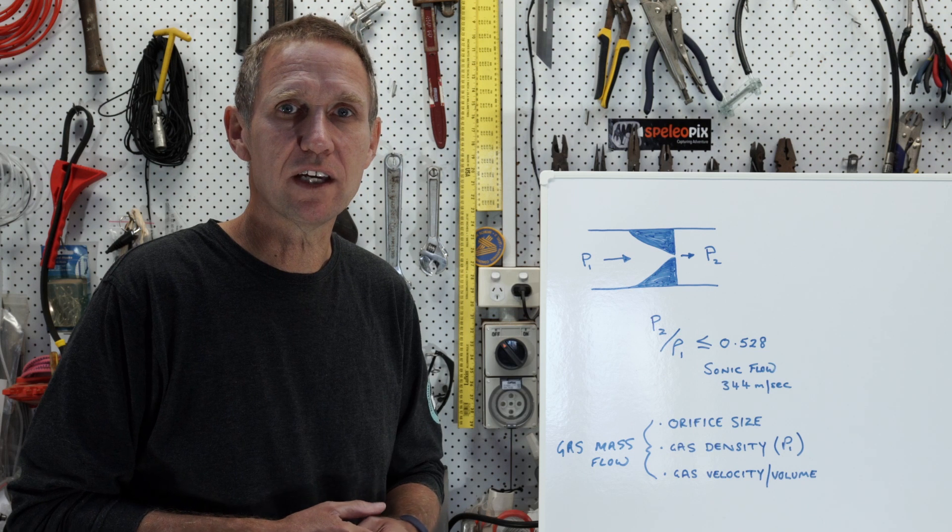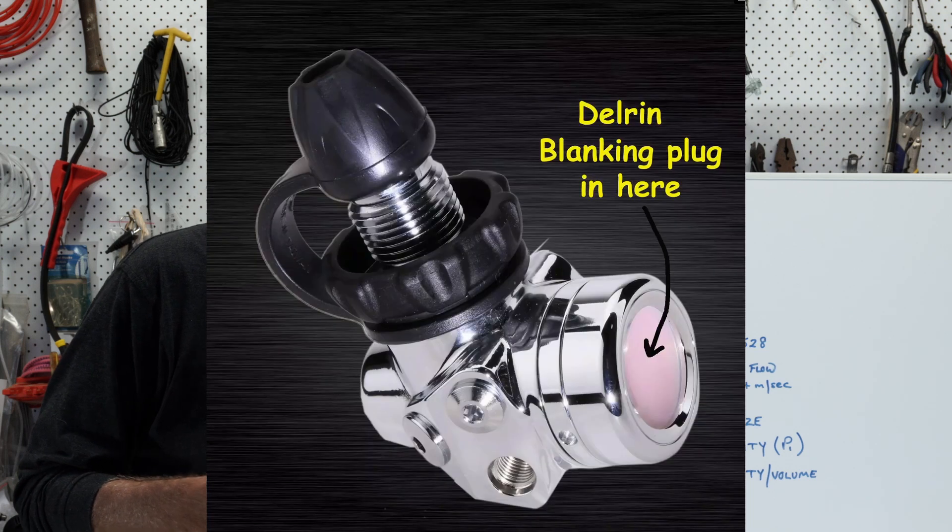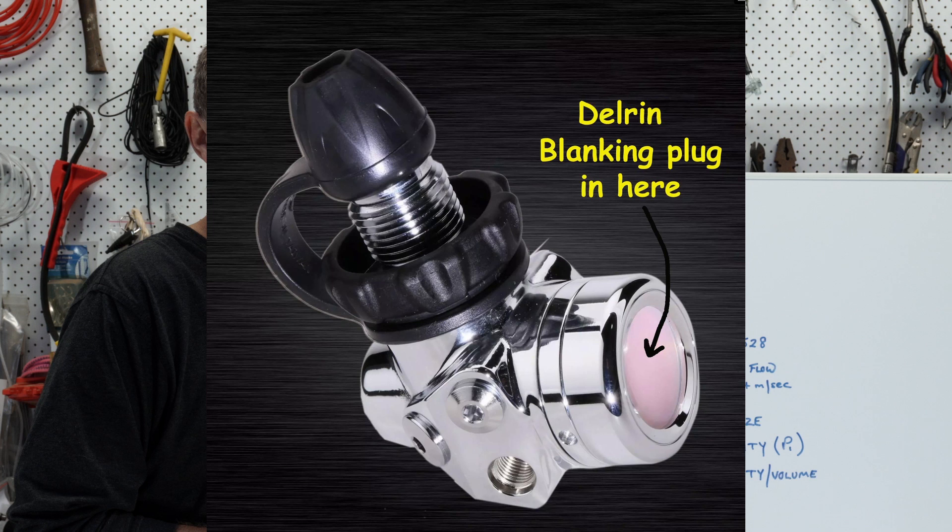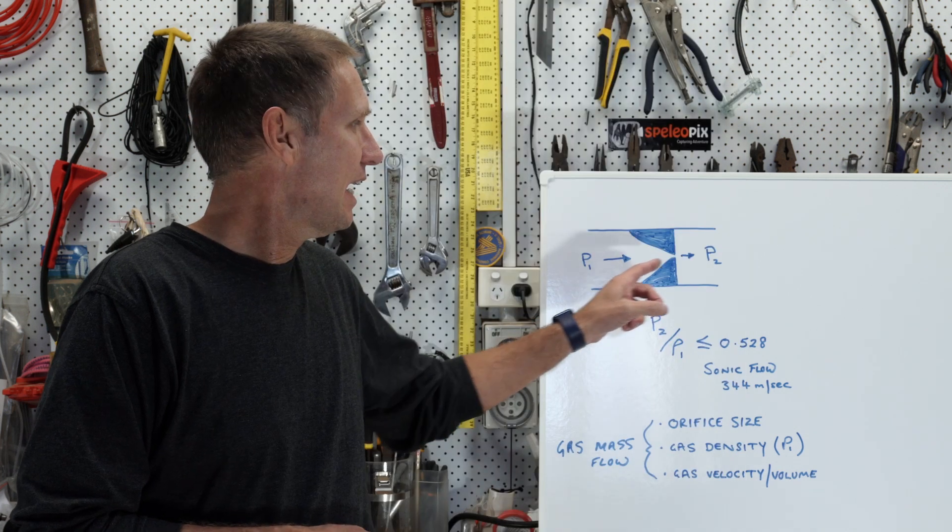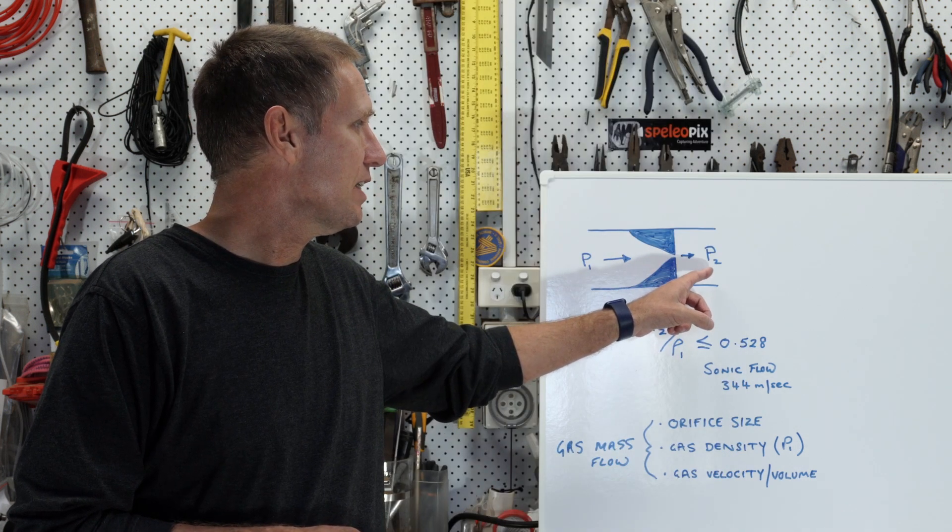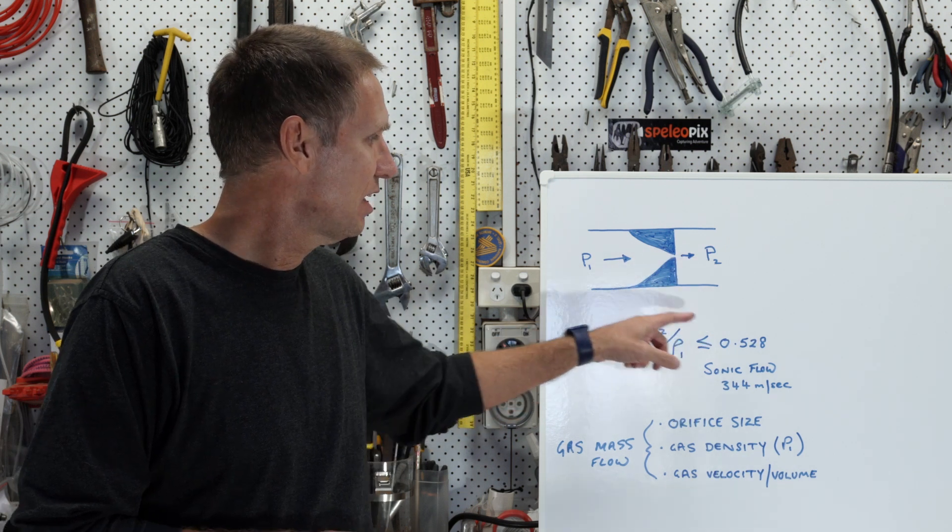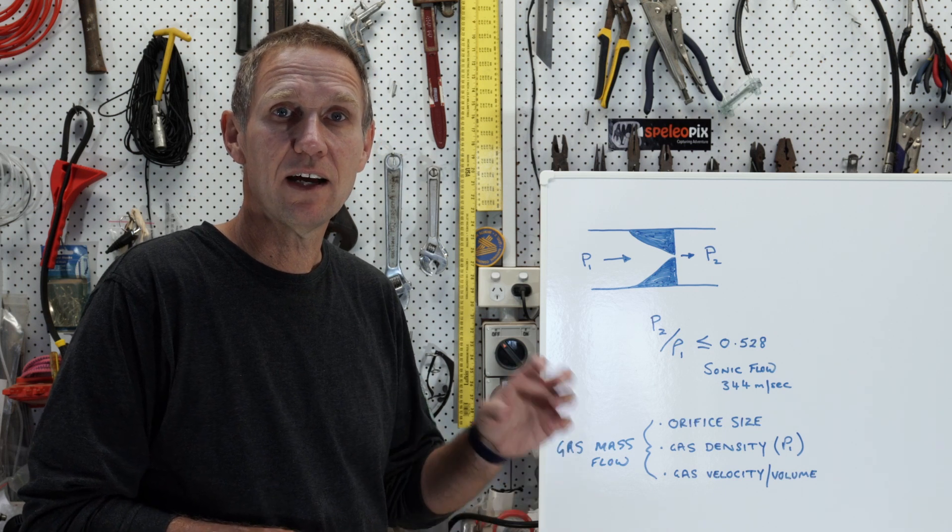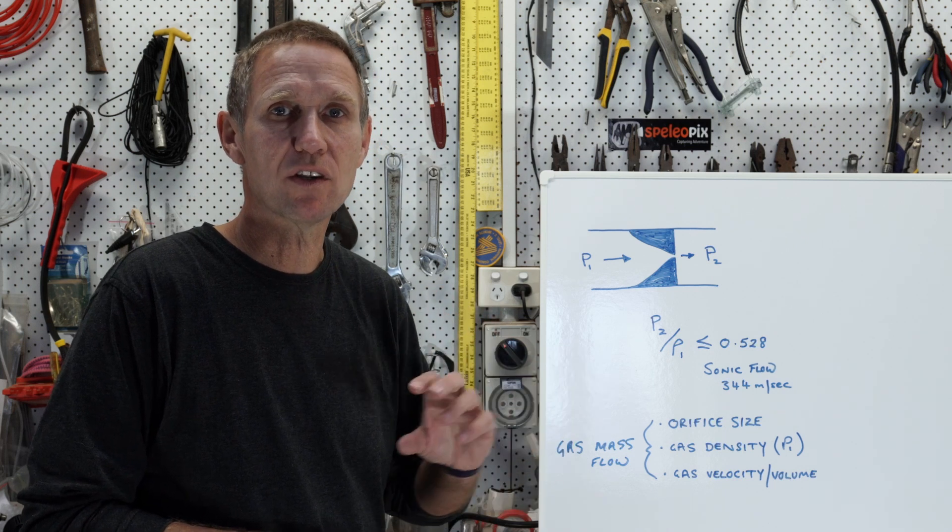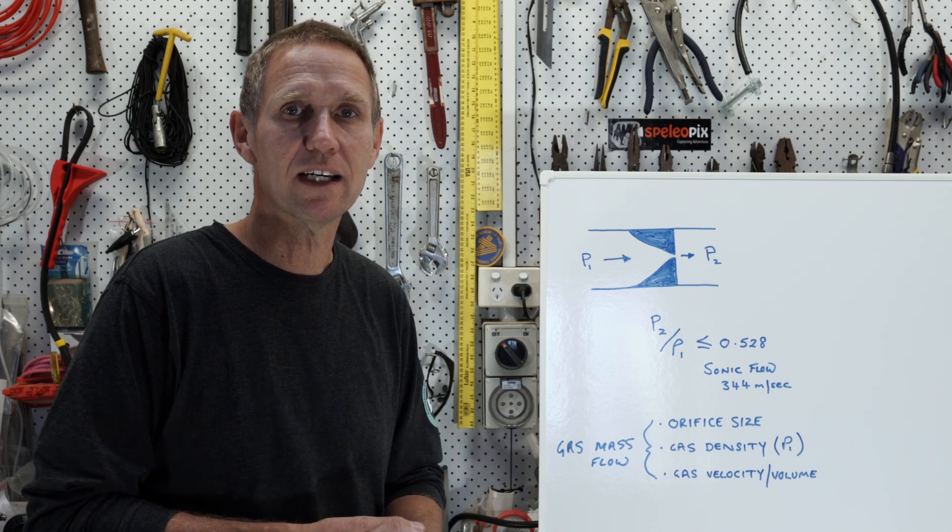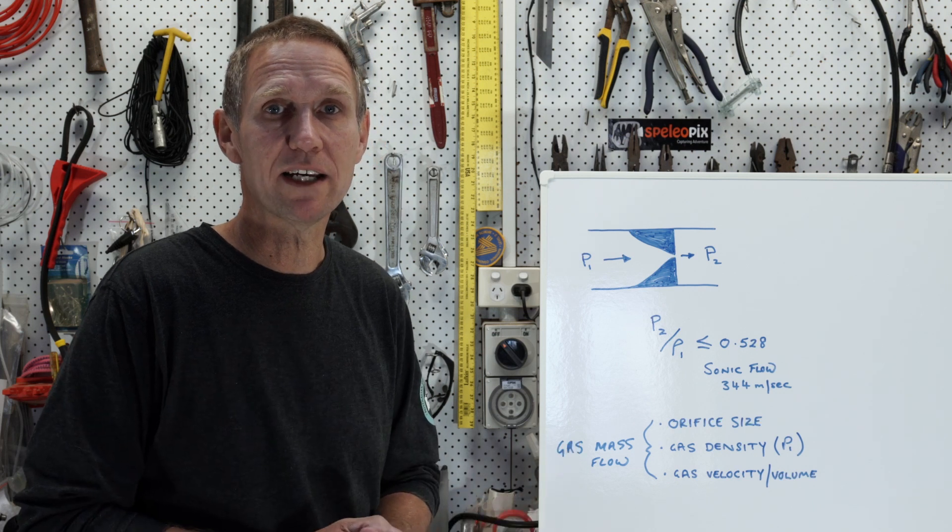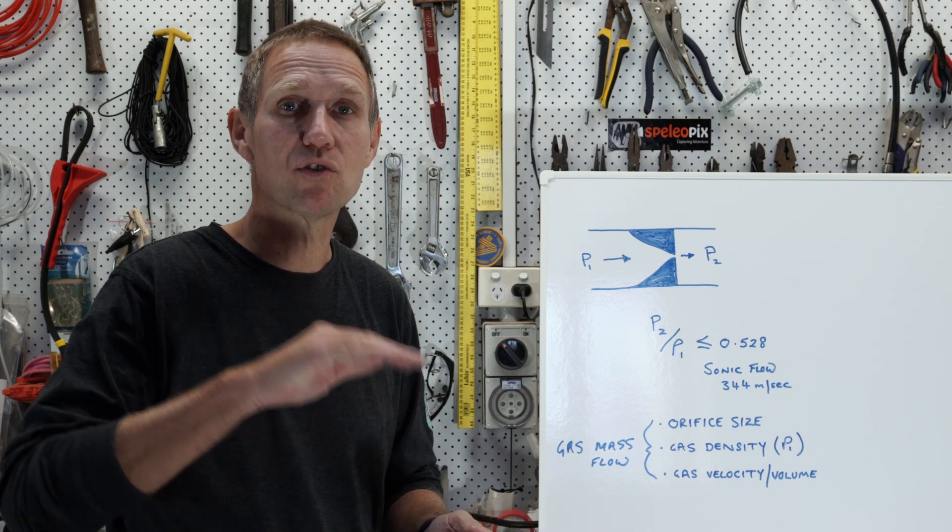So the genius of the decompensated regulator that was described by Gordon Smith with his invention of the KISS rebreather was that this will constantly stay at 10 bar if that's what it's set at. And although this will increase on the other side, as long as this ratio remains less than 0.528, sonic flow will continue which means we have constant mass flow. The constant number of molecules of oxygen will be flowing into the rebreather loop and our metabolic requirements will remain happy and the PO2 won't spike.